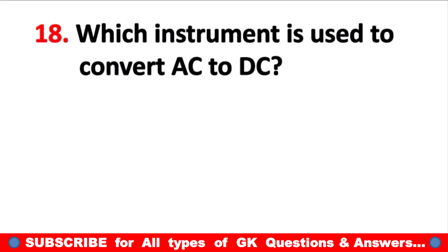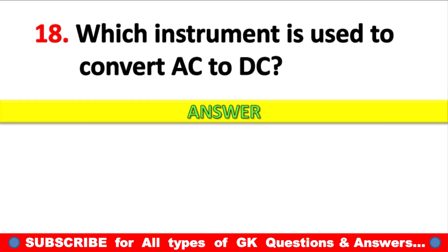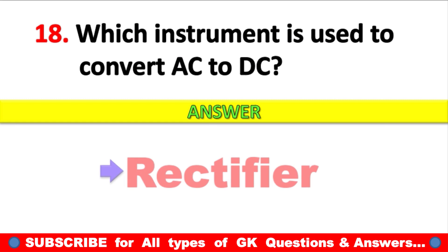Question 18: Which instrument is used to convert AC to DC, i.e., alternating current to direct current? Answer: Rectifier.